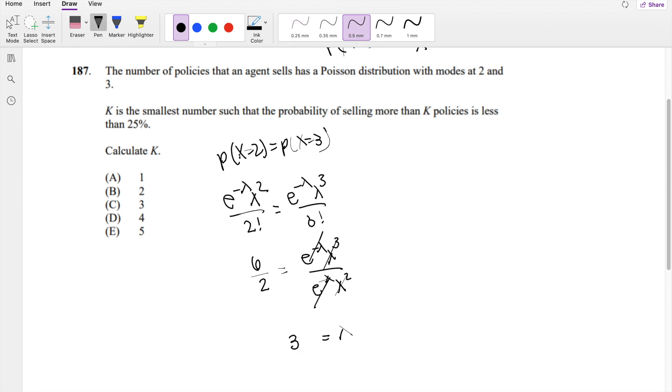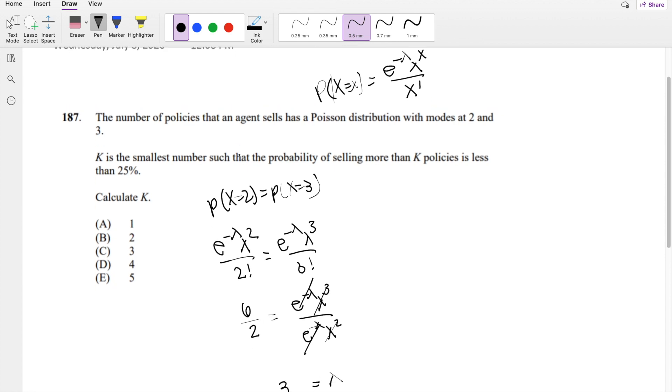This part I had to read a couple times because it's a bit confusing. It's saying k is the smallest number such that the probability of selling more than k policies—P(X > k)—is less than 0.25.